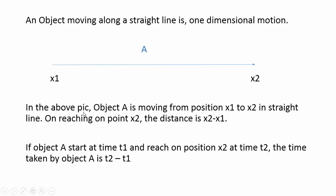And which time is it covered? It is calculated by the starting time and the ending time. If object starts at time t1 and reaches position x2 at time t2, the time taken by object A is t2 minus t1. If we start at one o'clock and reach at two o'clock, then time is one hour.